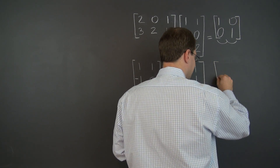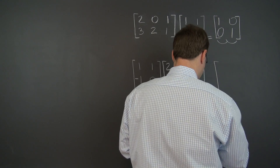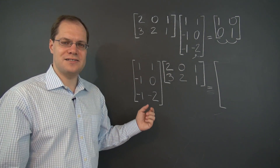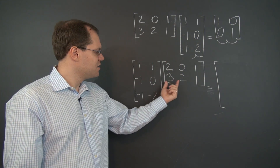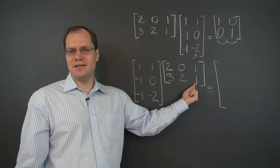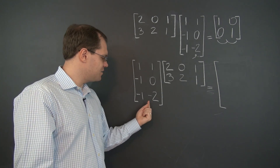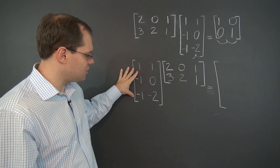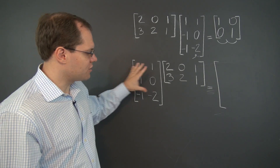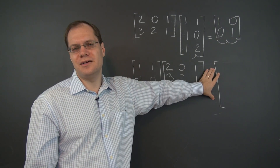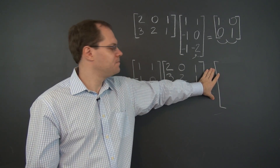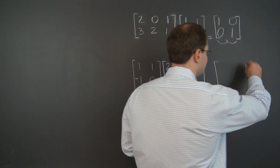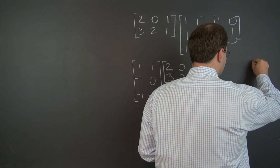The answer — well, the first question should be: what is the dimension of the answer? It is three different linear combinations of these two columns. Since these columns are from R3, this matrix will be three entries tall, and because it's three different linear combinations, it'll be a three-by-three matrix.